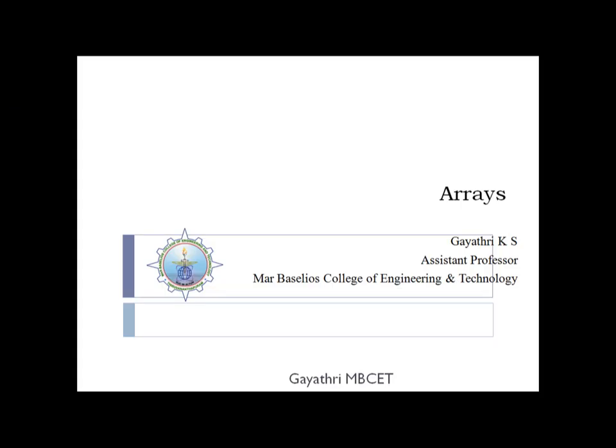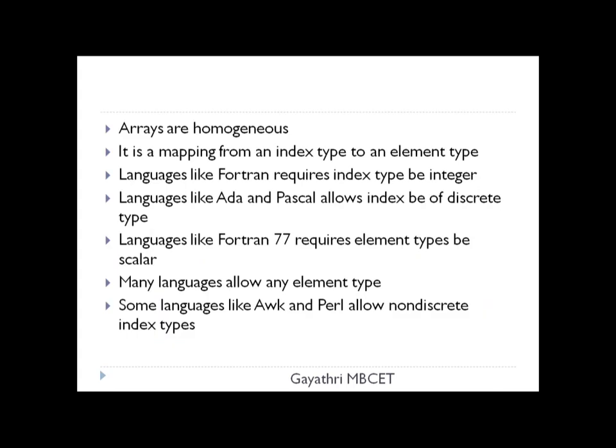Welcome to my next lecture on data types, which concentrates on arrays. Arrays, which is different from records, is a collection of homogeneous items. Records are concentrated on the collection of heterogeneous items, while arrays are concentrated on the collection of homogeneous items. It is a mapping from an index type to an element type.